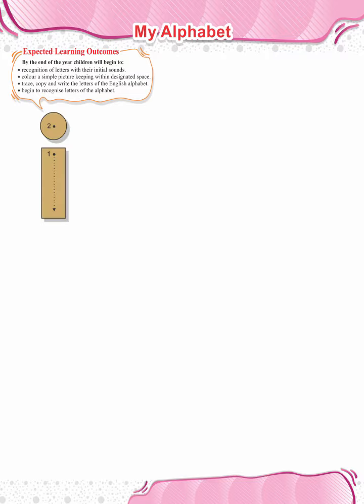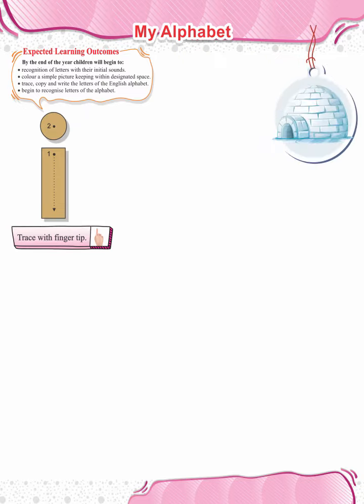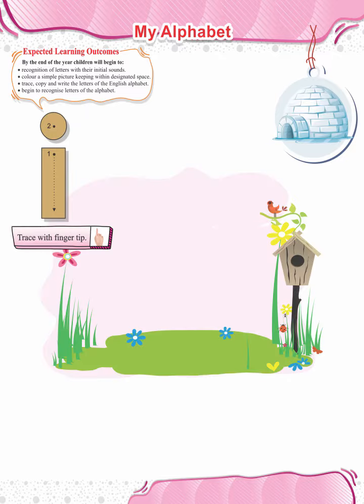Trace with fingertip. The letter I sounds as eh. Eh, igloo. Eh, igloo. Eh, igloo.